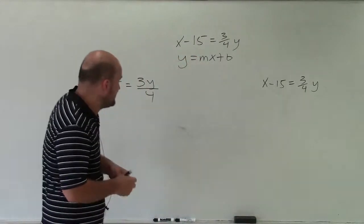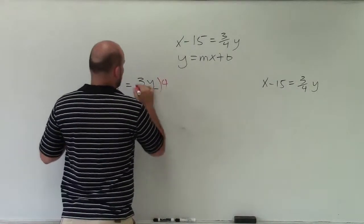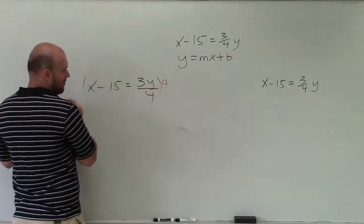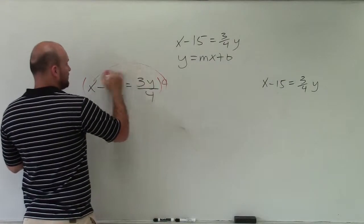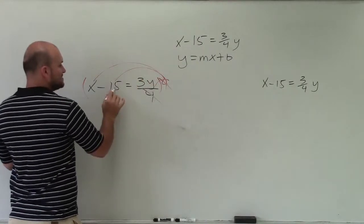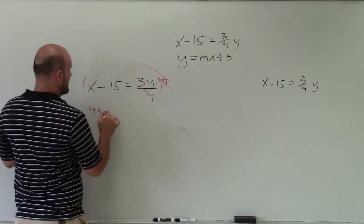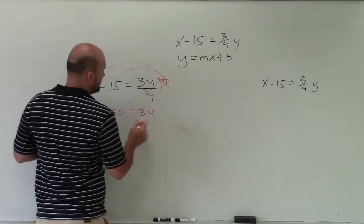One thing we like to do is always get rid of the fraction first. So since I'm dividing by 4, let's multiply everything by 4. So when I do that, I multiply 4 here, here, and here. Well, these 4's divide out. This becomes negative 60, and 4 times x is 4x. So I have 4x minus 60 equals 3y.